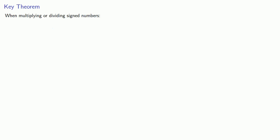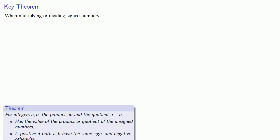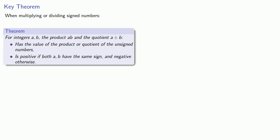So how do we multiply or divide signed numbers? For that we'll rely on a key theorem. When multiplying or dividing signed numbers, for integers a and b, the product ab and the quotient a divided by b will have the value of the product or quotient of the unsigned numbers.